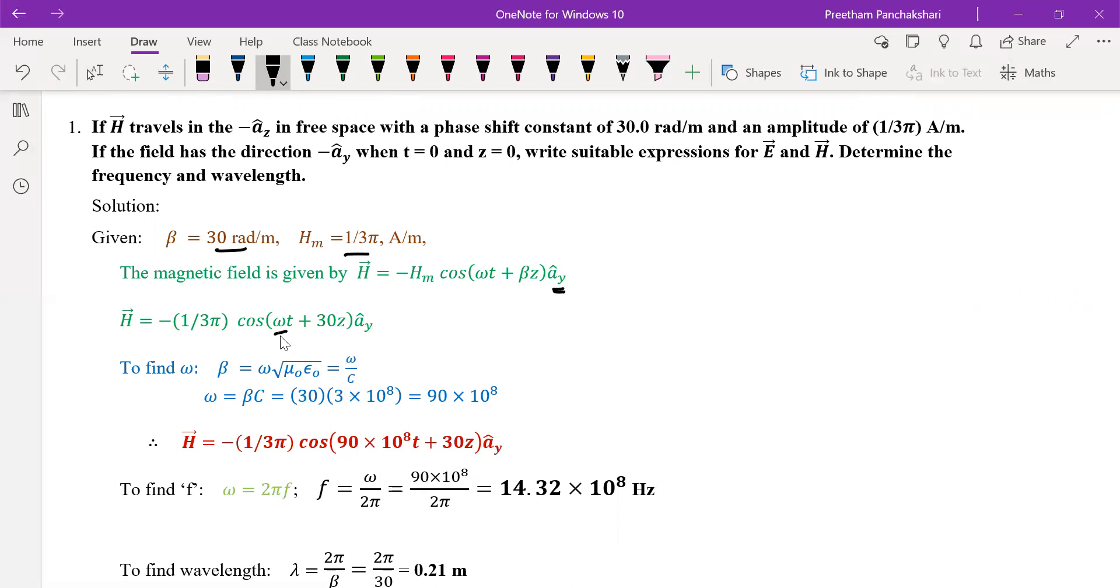We need to find omega. Beta is given by the relation ω into root of μ₀ε₀, that is ω by c because c is 1 by root of μ₀ε₀, 3 into 10 power 8. Using this relation, we can write β equal to ω by c. So ω is equal to β into c. So we can perform this multiplication to get 90 into 10 power 8 radians per second.